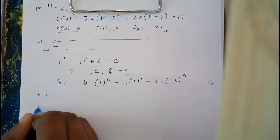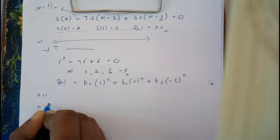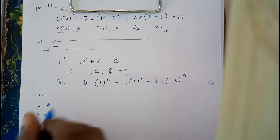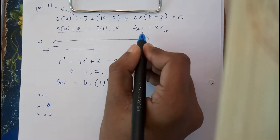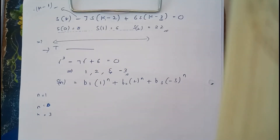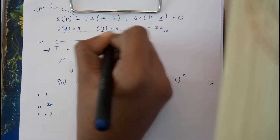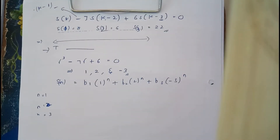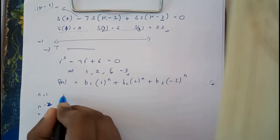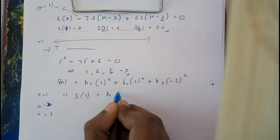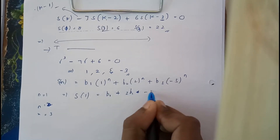Now substitute the initial conditions. Actually, a correction: the given values are for n = 1, 2, 3 — sorry about that. So we write s(1) = b1·(1) + b2·(2) + b3·(−3), and similarly for s(2) and s(3).